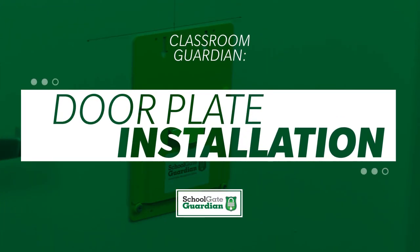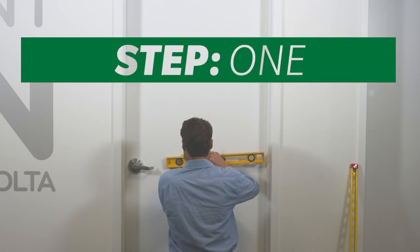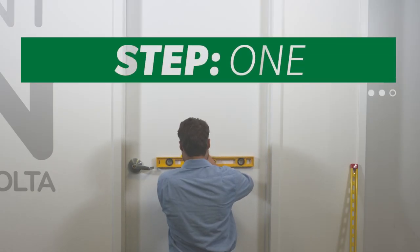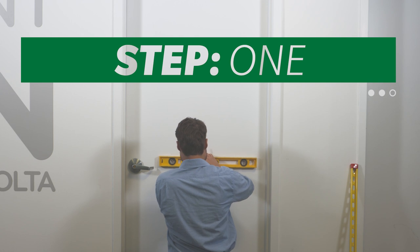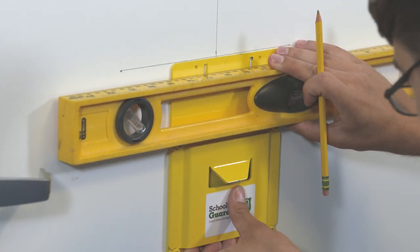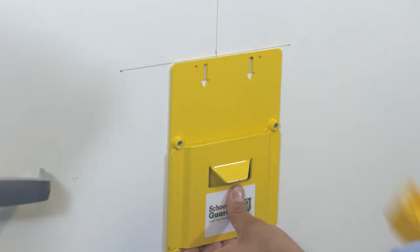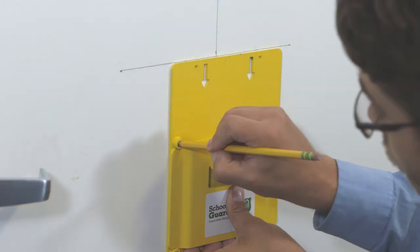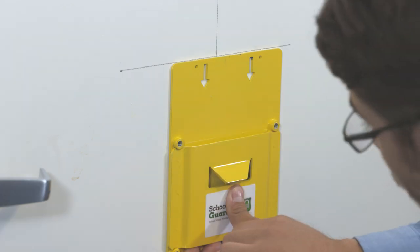Door Plate Installation - Step 1. To avoid visible splintering, it is recommended to drill pilot holes from the outside of the door to the inside of the door. Using a carpenter's level, place the door plate level and in the desired position on the outside of the door. Use pencil or marker to mark where the four pilot holes will be drilled on the outside of the door.